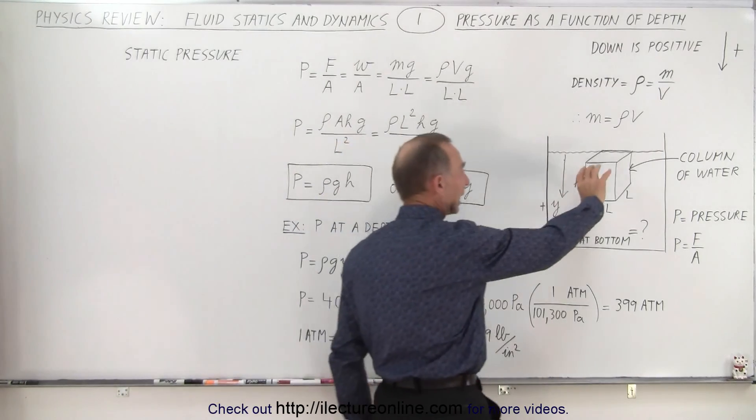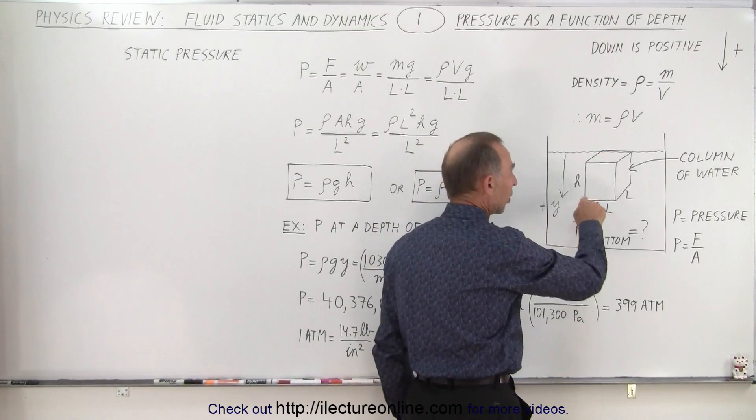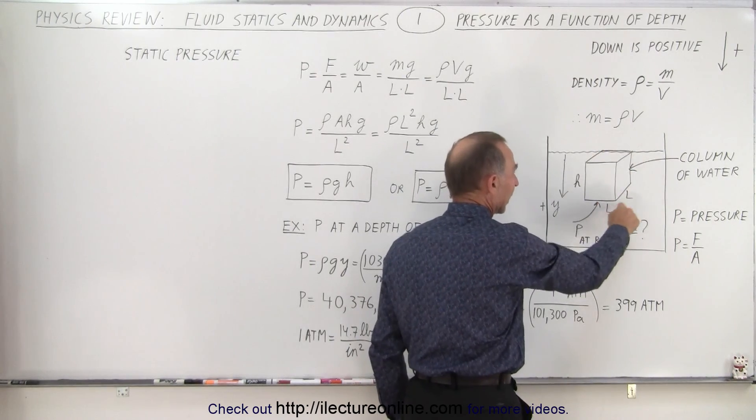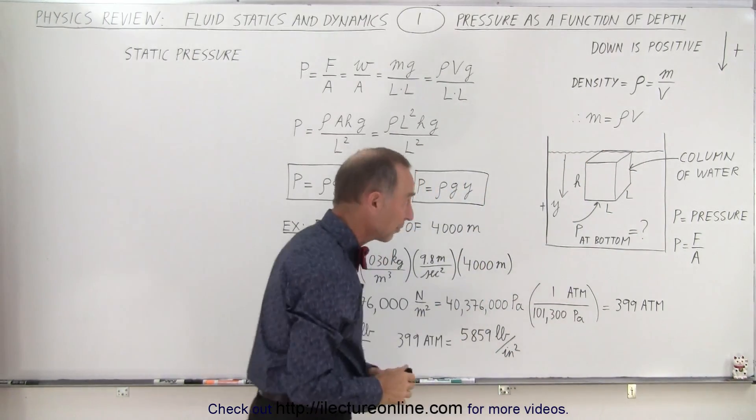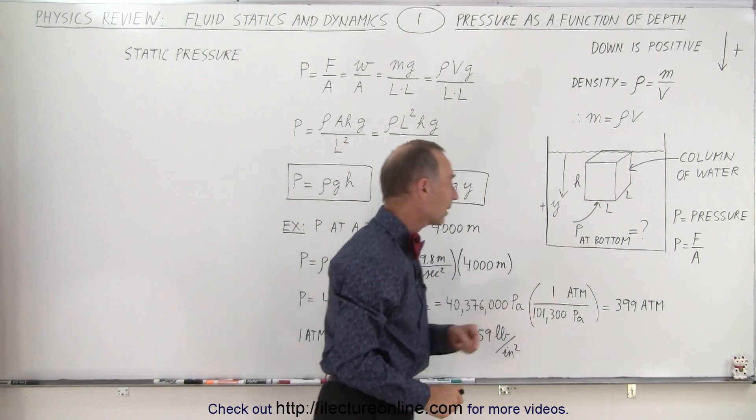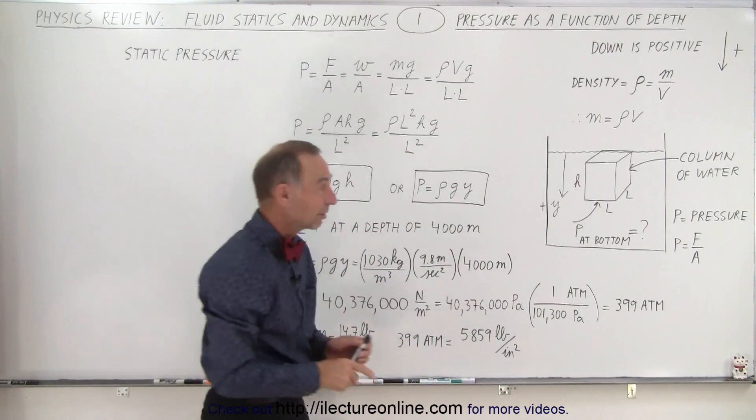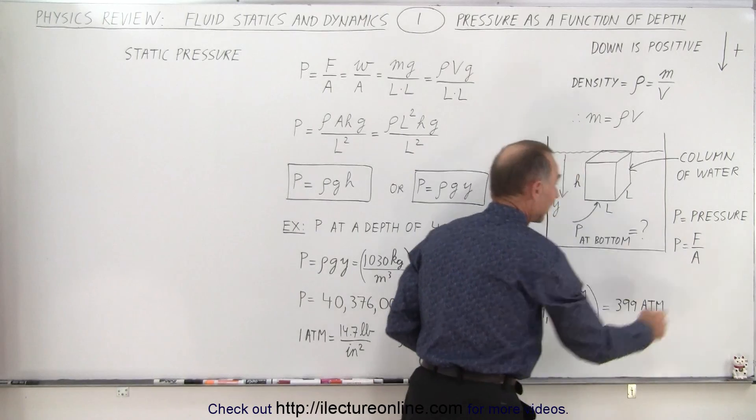We envision a column of liquid with cross-sectional area L by L and height h (or depth y). We want to know the pressure at the bottom. We start with the basic concept that pressure equals force divided by area.